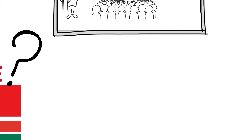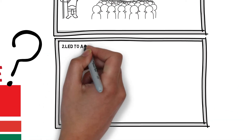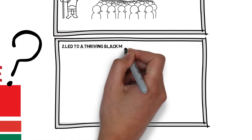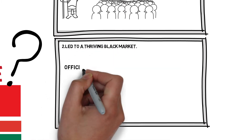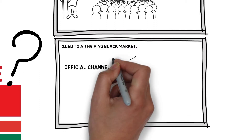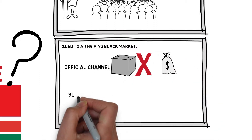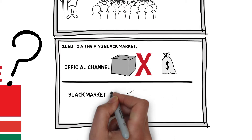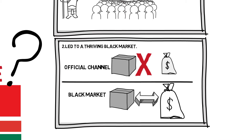Second, economic sanctions have often led to a thriving black market. Economic sanctions do not affect unofficial market operations, or what we call the black market. Because of trade restrictions and shortages of goods, the prices of smuggled goods are often very high, leading more smuggling groups to take risks in exchange for high profits.